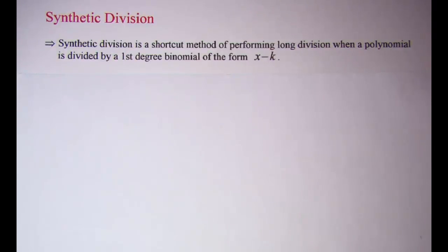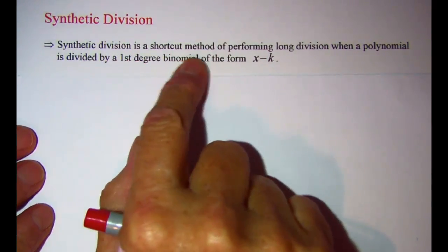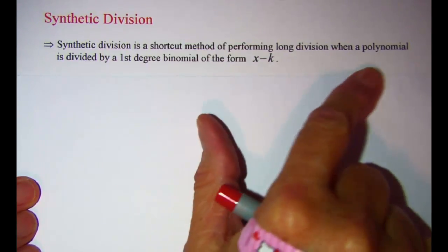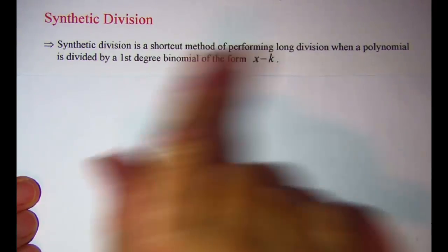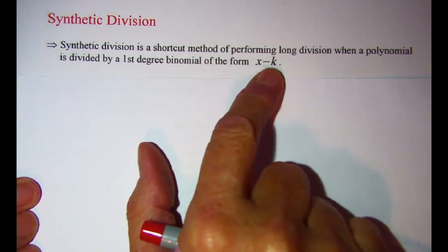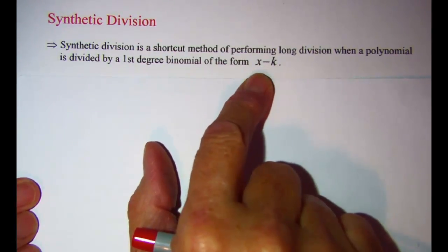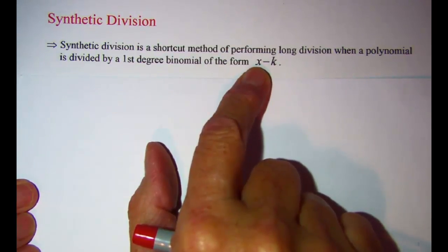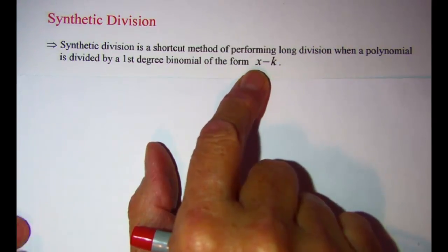In this video we will be looking at synthetic division. Synthetic division is a shortcut for performing long division. You can do synthetic division when you are taking a polynomial divided by a first degree binomial of the form x minus k. The divisor needs to be first degree — the x has to be to the first power and the coefficient of that x variable must be 1.